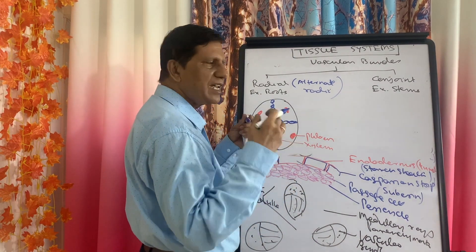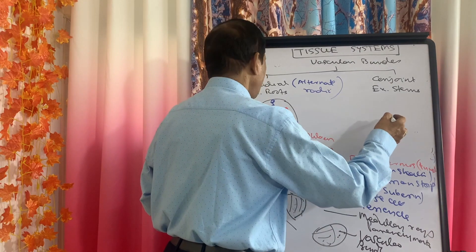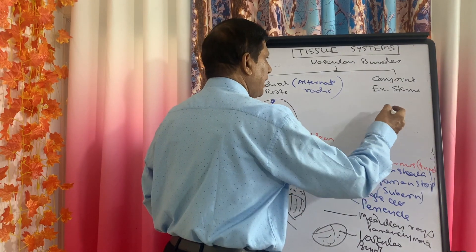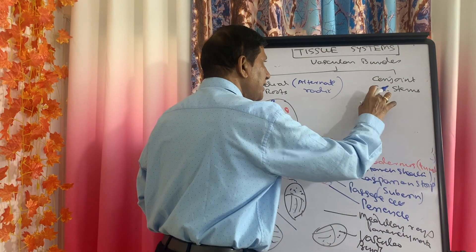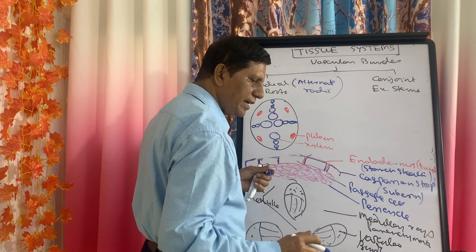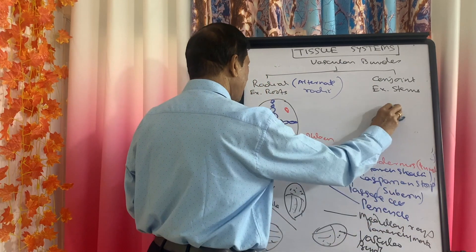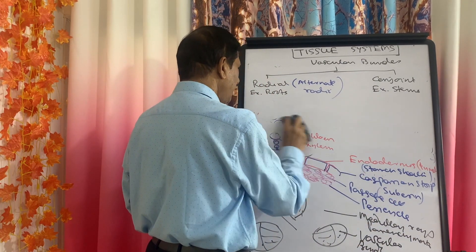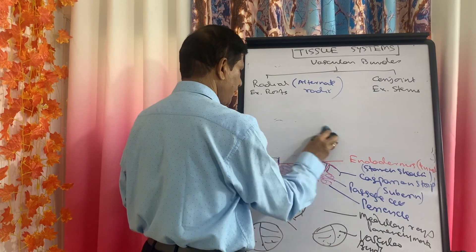In the conjoined type, xylem and phloem are present in the same radii. This conjoined type is again of different types: it may be collateral, bicollateral, or concentric.